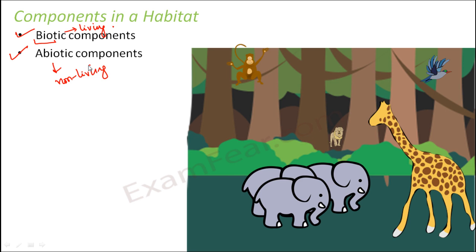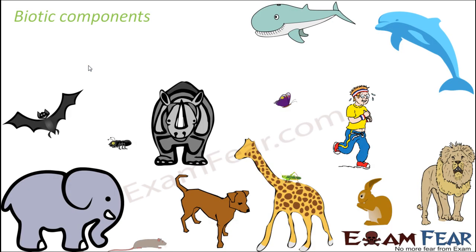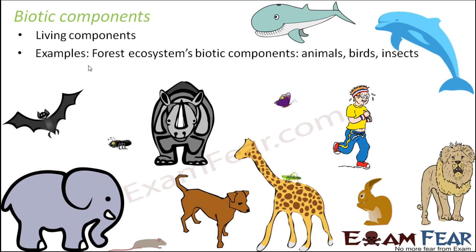Whether it is a terrestrial habitat or aquatic habitat, every habitat must have these two basic components — the biotic and the abiotic components. The biotic components are the living components of a habitat — these could be large animals, human beings, fish, birds, and tiny insects. In a forest ecosystem, biotic components include animals, birds, insects, and plants as well.